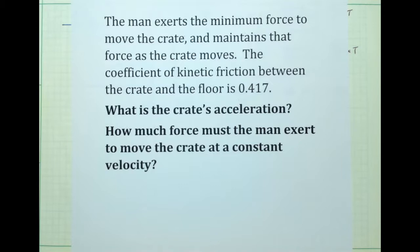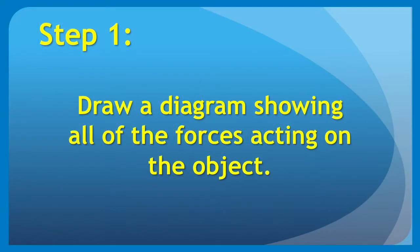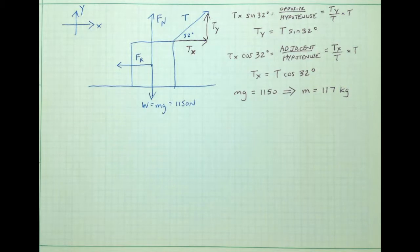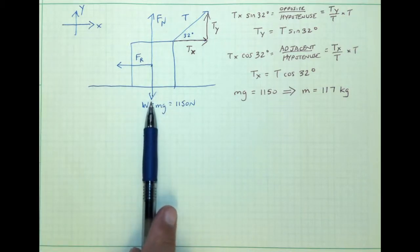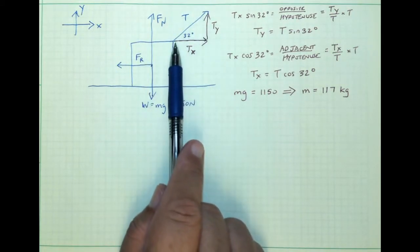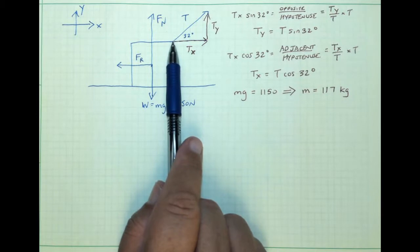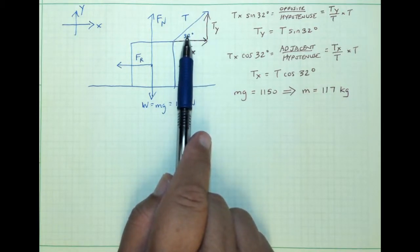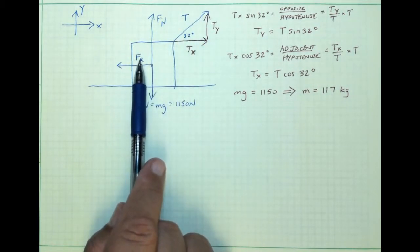As always, the problem-solving process with Newton's second law first involves drawing a diagram showing all the forces acting on the object. The diagram is unchanged from our previous example. We still have four forces acting on the crate: the weight force downward, the normal force straight up, and the tension force applied upward at a 32-degree angle to the horizontal.